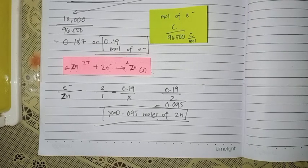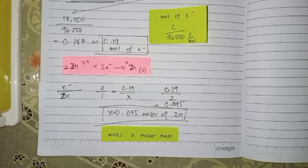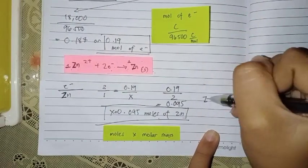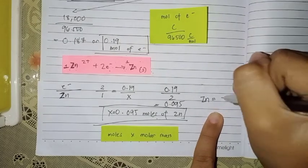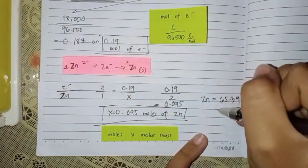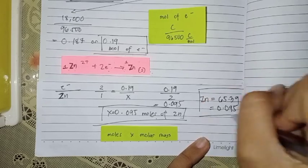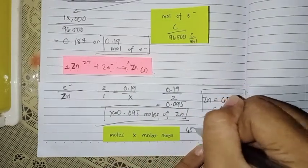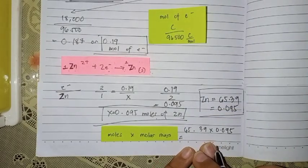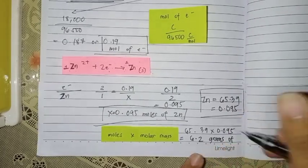But the problem asks for grams of zinc. We only have its mole. What do we do? We multiply the moles by its molar mass. The molar mass of zinc is 65.39. The moles equal 0.095. We multiply these two. 65.39 times 0.095 equals 6.2 grams of zinc.